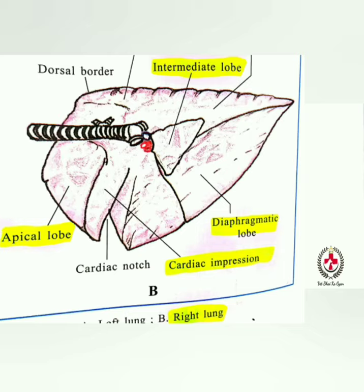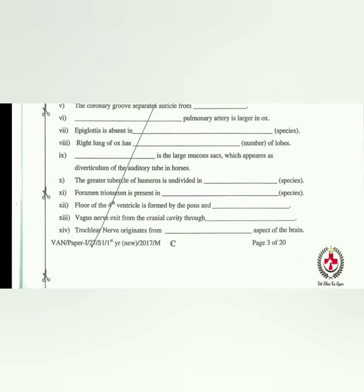The largest mucous sac which appears as a diverticulum of the auditory tube in horses is the guttural pouch. Remember this answer.